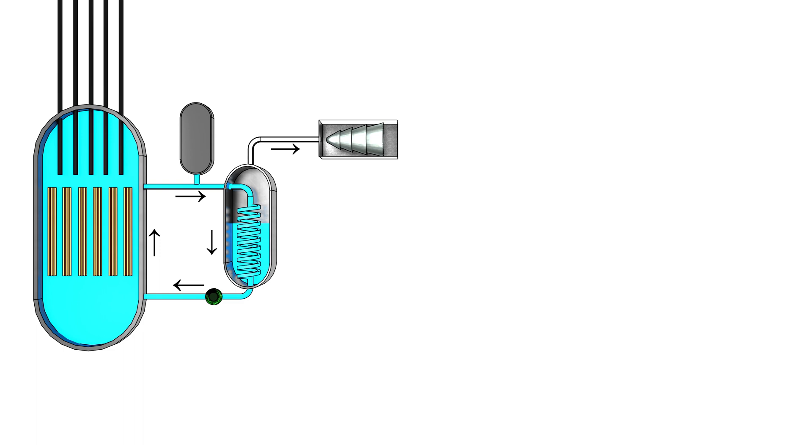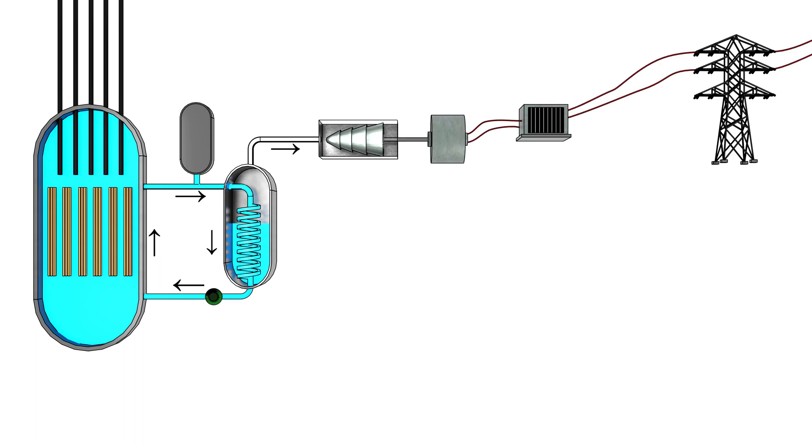The produced steam spins the turbine in the generator very fast due to its very high pressure and produces electricity. Transformers increase the voltage of the electricity produced by the generator, allowing transportation of the electricity to end-users with as little loss as possible.